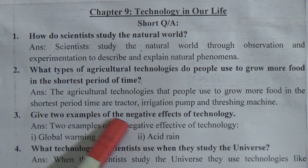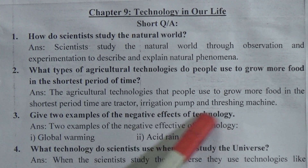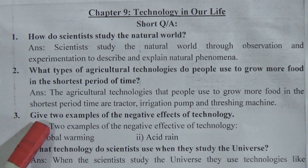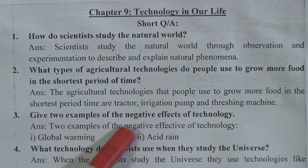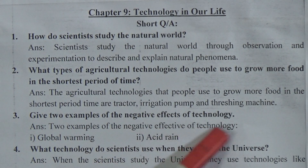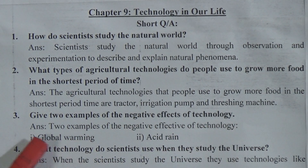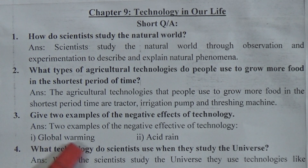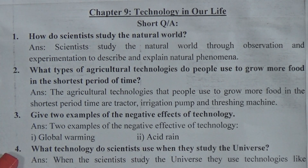Question 3: Give two examples of negative effects of technology. Answer: Two examples of negative effects of technology are global warming and acid rain.